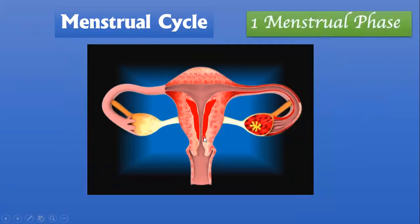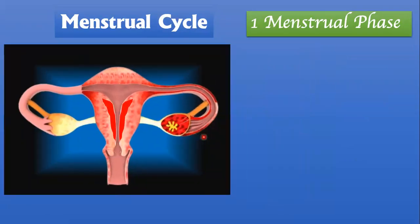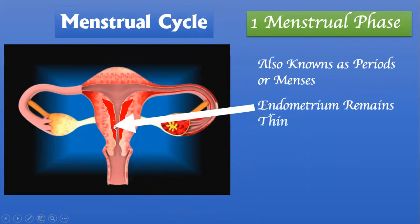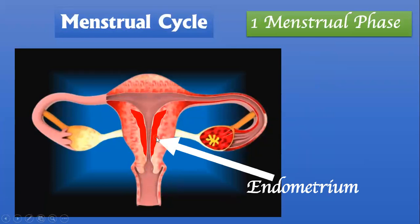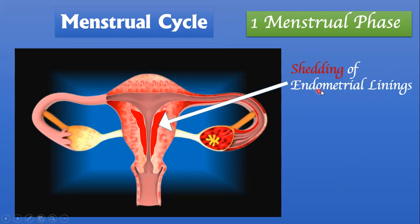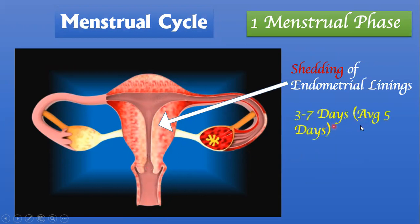The first phase of the menstrual cycle is the menstrual phase, also known as periods or menses. During the menstrual phase, the endometrial lining of the uterus remains very thin because throughout this phase there is shedding of the endometrial lining. The endometrium breaks down and comes out through the vagina — this is how blood loss occurs through the vagina, lasting nearly 3 to 7 days with an average of 5 days.